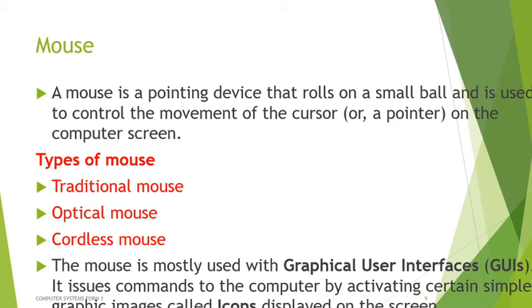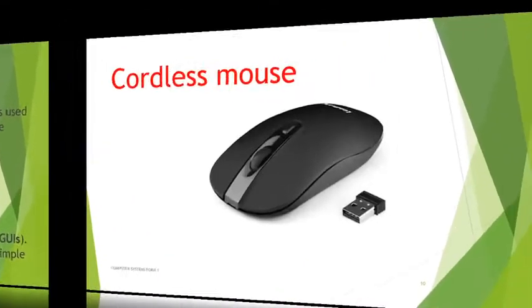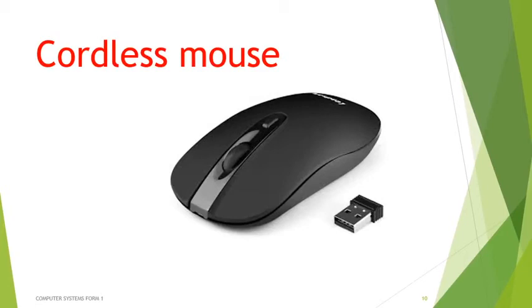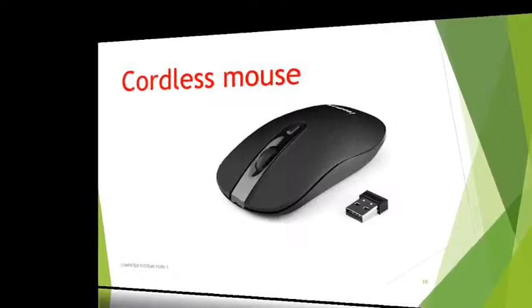The cordless mouse has a small USB transceiver and transmits infrared waves towards the machine — similar to how a TV remote control works.